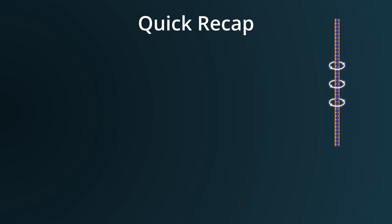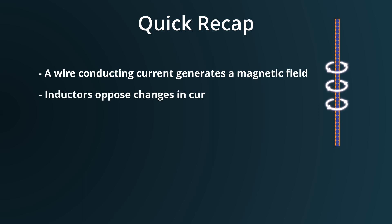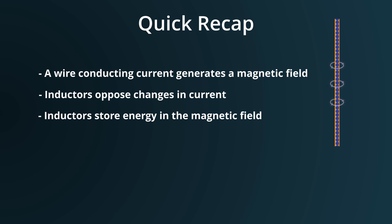Now let's summarize what we have covered so far. We have seen how a simple wire, when carrying electric current, not only generates a magnetic field but also inherently opposes rapid changes in that current. This behavior results in the storage of energy within the magnetic field itself. This is, in essence, the basic functionality of an inductor.